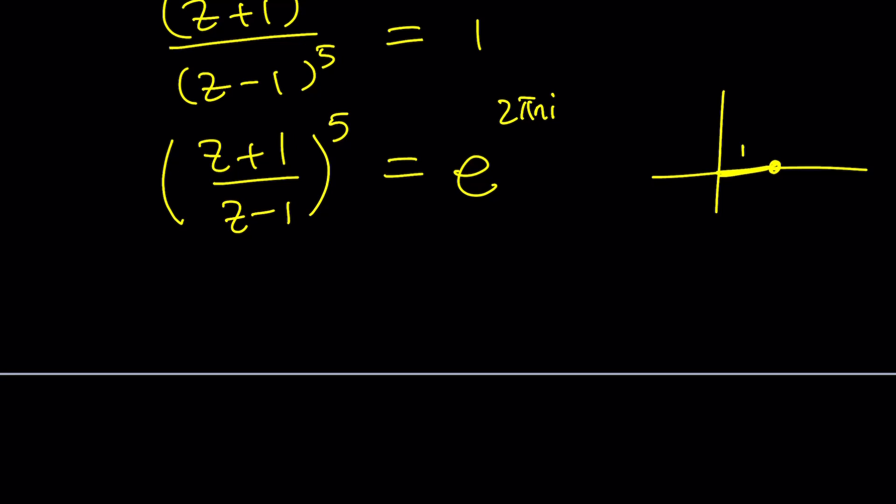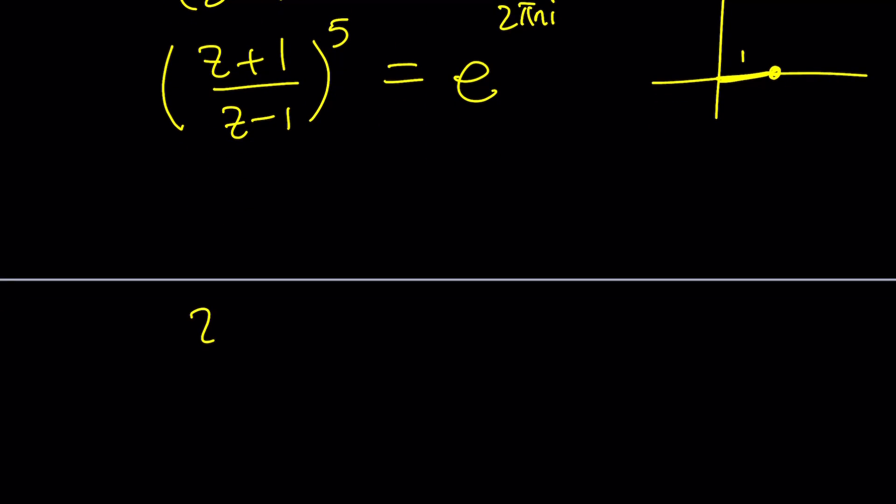So this kind of gives us a good idea, right? So what is z? Well, first we need to take the 5th root on both sides. And when we do, we're kind of dealing with the 5th roots of unity, right? 1 is unity. So it's going to look like this: e to the power 2 pi n i divided by 5. In the exponential form, taking the 5th root is a piece of cake. Very easy.